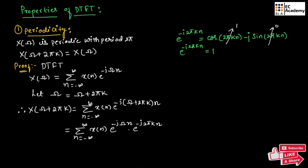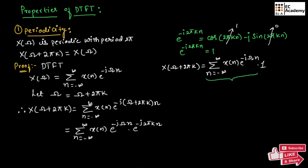So, if we substitute this value in the above equation, we can say X of omega plus 2 pi k will be equal to summation of n from minus infinity to infinity of x of n exponential to the power of minus j omega n into 1. This is similar to the standard formula of DTFT. Therefore, we can say X of omega plus 2 pi k will be equal to X of omega. So, this is the proof.